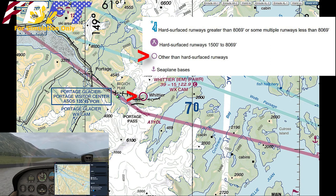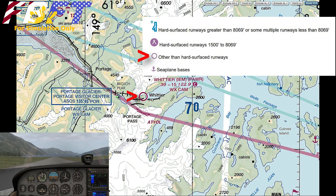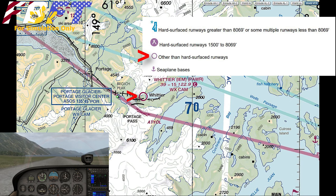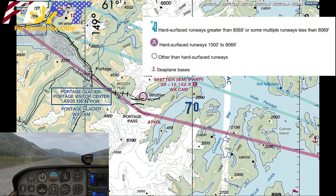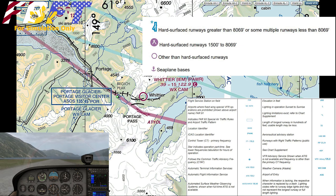The airport circle for Whittier is colored magenta, which means it will not be a towered airport. Later we are going to see some airports colored blue, and those will be towered. The label Whittier in black text is actually identifying the town right beside the airport and not the airport itself. The airport's label is in the same magenta color as the airport circle.